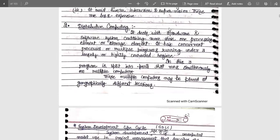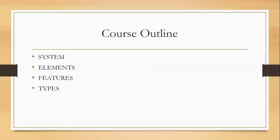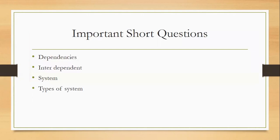Key points to remember from this video: what do you mean by dependency, interdependency, and external dependency; what is a system, concurrent system, distributed system, and their types; and the basic advantages of both. The elements to remember are input, output, processor, control unit, storage, environment, and boundaries. You must be aware of the difference between environment and boundaries — boundary is just the outer part of a system, while environment is the inside part. Thank you.